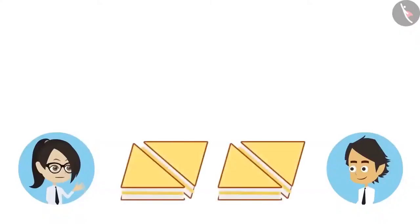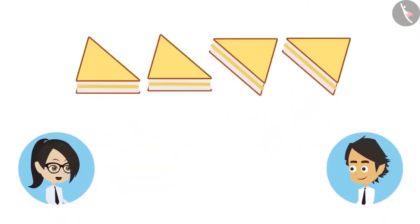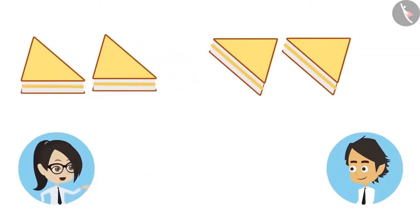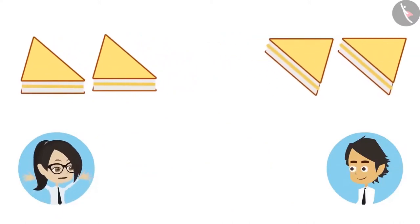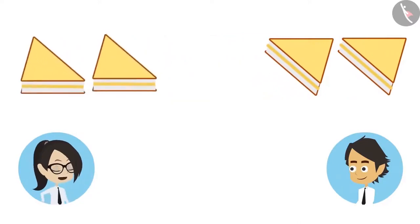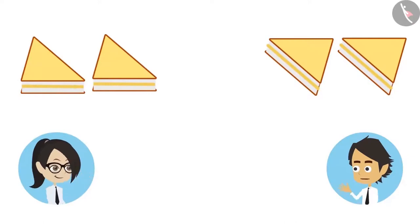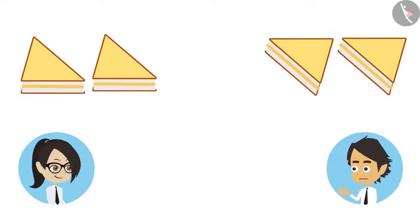Yes, like I have four sandwiches. If we divide four sandwiches into two equal parts, then one part will have two sandwiches. I will keep one part for myself and the other part I will share with you. Now look, I have two sandwiches and you too have two sandwiches. Yes, now I have half of your sandwich. But we could count the sandwiches and find the number of halves.